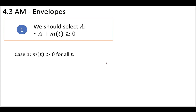Let's consider a few different cases for how we should select A. In case one, it's very easy. If we want to meet the criteria that A plus the message is greater than zero, and our message just happens to be larger than zero for all T, then A can simply be zero — the message is already larger than zero the whole time. So the envelope will contain the same information as the message.